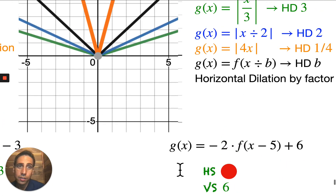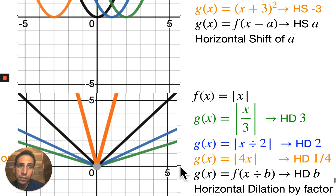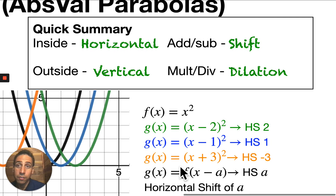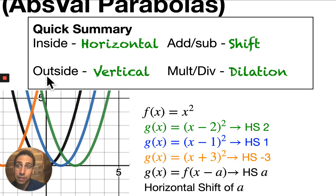Remember from your previous notes: if it's a vertical dilation, that means outside multiplication.